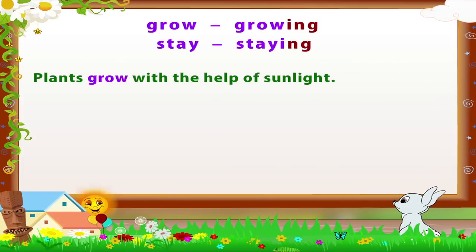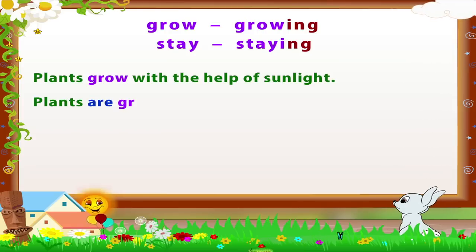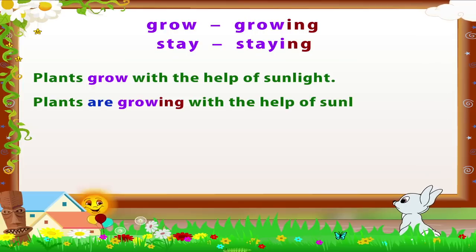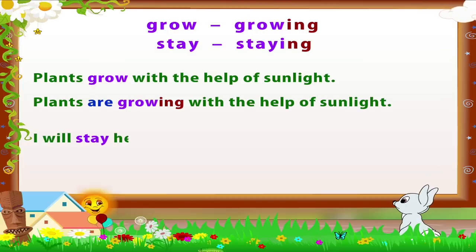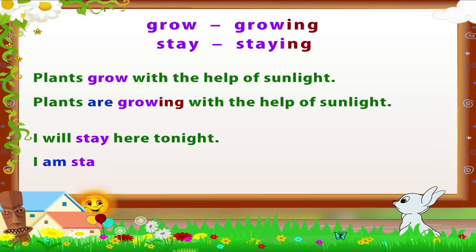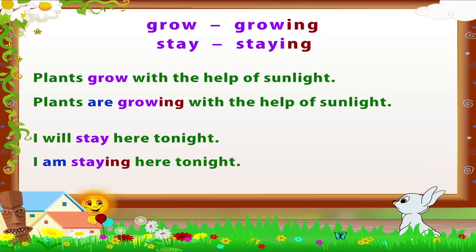For example: grow → growing; stay → staying. 'Plants grow with the help of sunlight' becomes 'Plants are growing with the help of sunlight.' 'I will stay here tonight' becomes 'I am staying here tonight.'